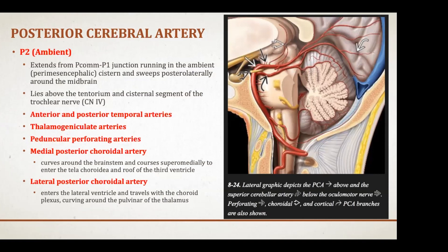The medial posterior choroidal artery curves around the brainstem, courses superiorly, enters the tela choroidea and the roof of the third ventricle. The lateral posterior choroidal artery enters the lateral ventricle and travels with the choroid plexus, coursing around the thalamus.